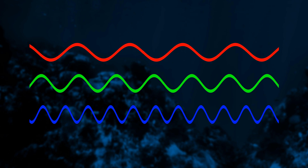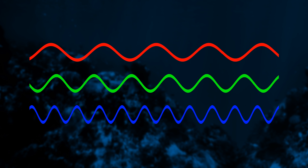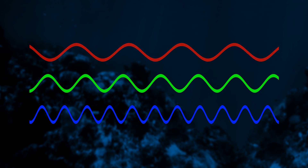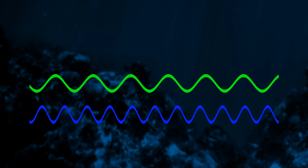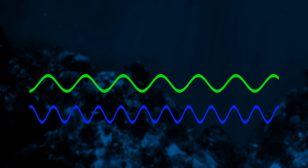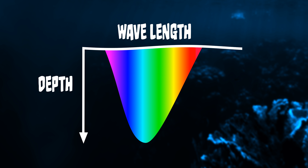The reason that absorption affects the color of the water is because different wavelengths of light are absorbed at different rates. Red light, which has longer and slower wavelengths, is more likely to hit a particle and therefore is attenuated faster than blue and green light. Therefore, blue and green light travels deeper into the water, giving the water its blue color.